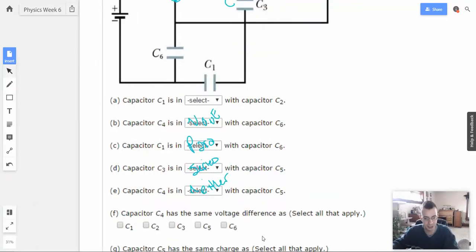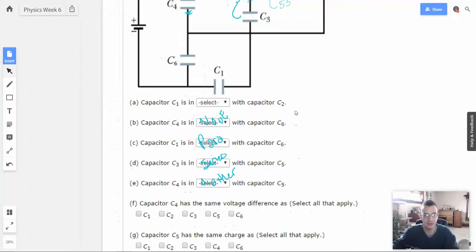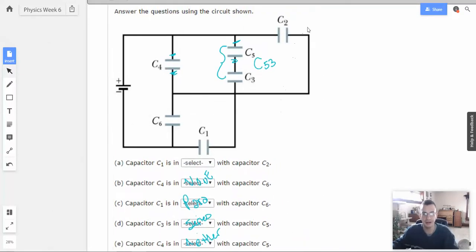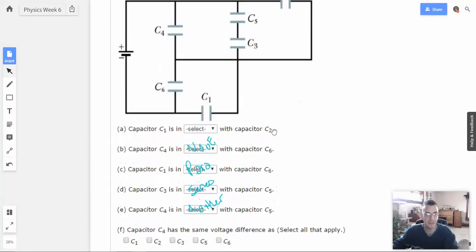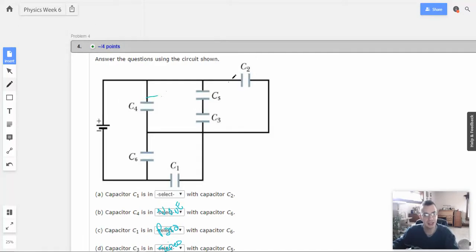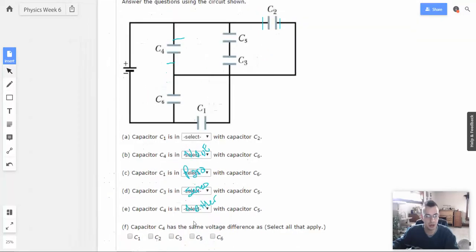Capacitor C4 has the same voltage difference as. This is asking, what is in parallel with C4? We're going to do 1, 2, 3, 5, and 6. You don't ask if C4 is in parallel with itself, which seems reasonable. C1, no, because they do not have the same start points. C2, yes. This wire is connected right to there.